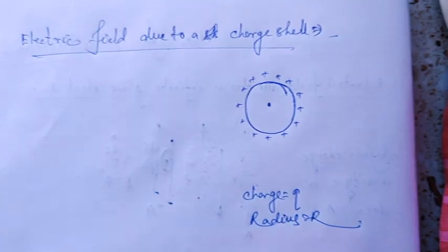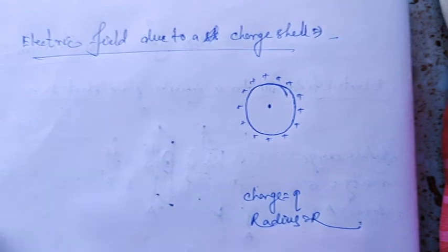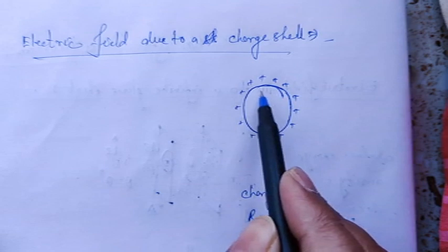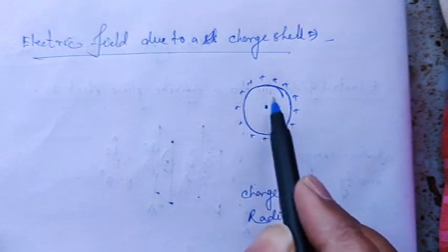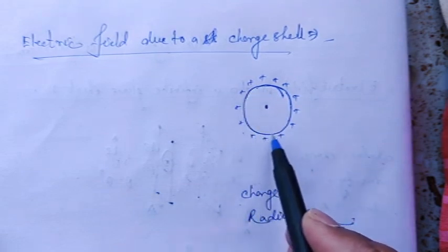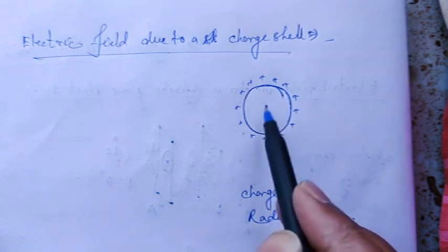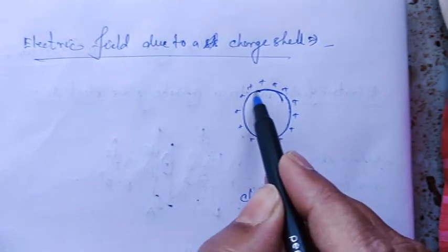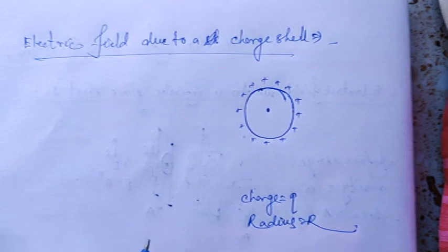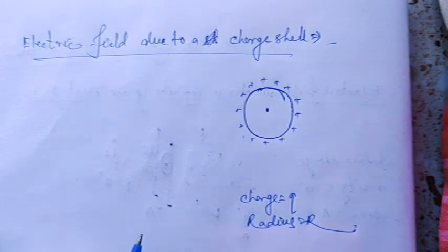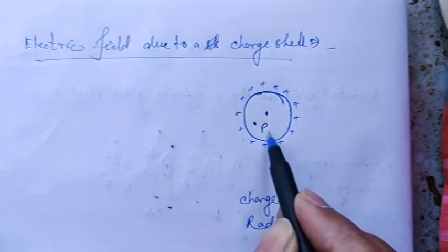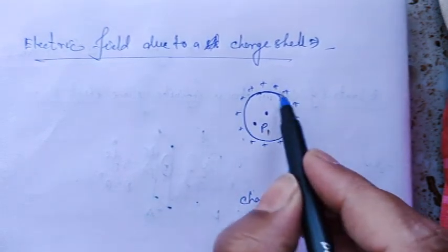Now a new case: electric field due to a charged spherical shell of charge Q and radius R. A cell (shell) means charge exists only on this surface — inside is free, and outside is also free. There are three different positions in which we can find the electric field: number one is P1 inside the shell, number two is P2 on the shell, and number three is P3 outside the shell.